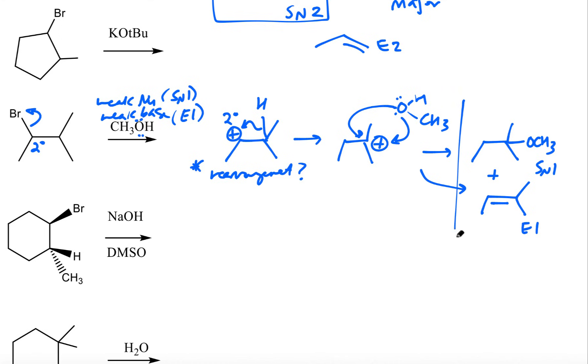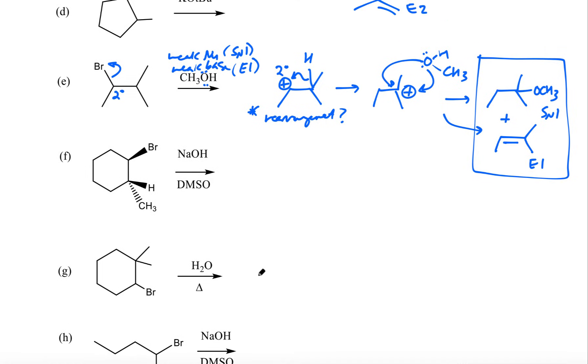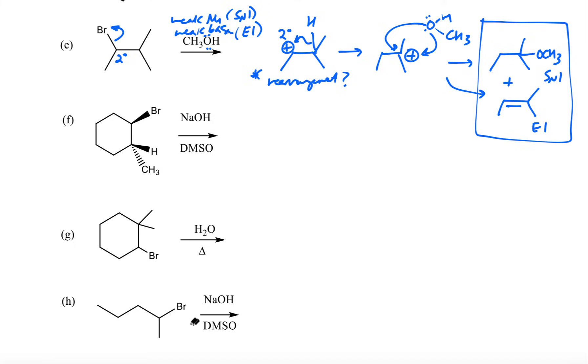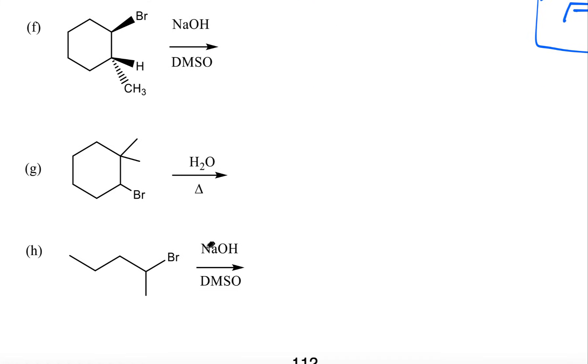Okay, at least that's what we're going to do in this class. So we're going to have both the SN1 product and the E1 product as a mixture. Now in terms of solvent, we need to talk about that a little bit. So if I'm going to do an SN2 reaction, aprotic solvent helps to keep the nucleophile free to attack. So aprotic solvent is going to be great for SN2.